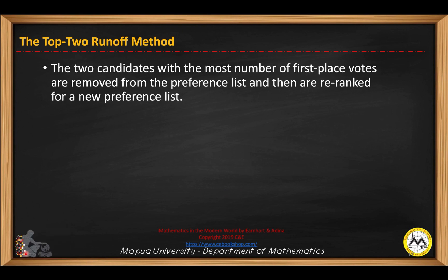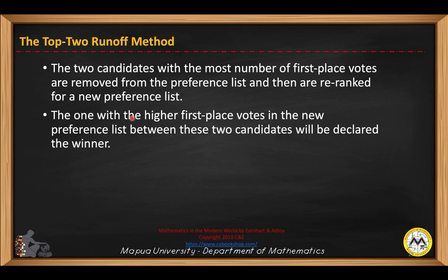The next method is called the top-two runoff method. The two candidates with the most number of first-place votes are retained from the preference list, and then the preference list is redone again. The one with the highest first-place votes in the new preference list between the two candidates will be declared the winner.